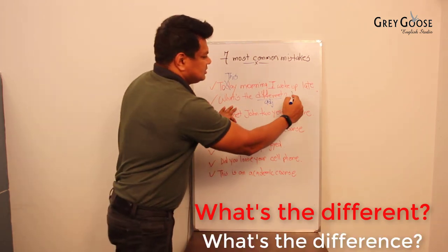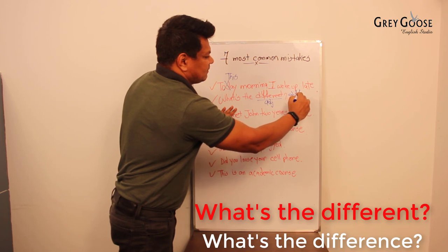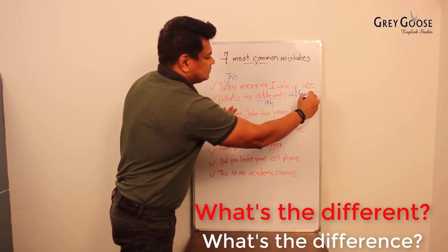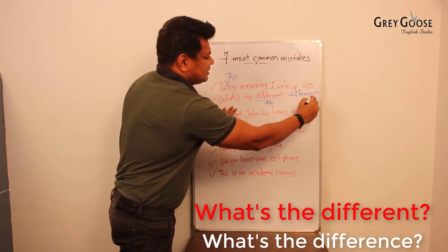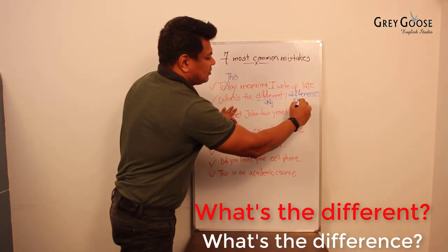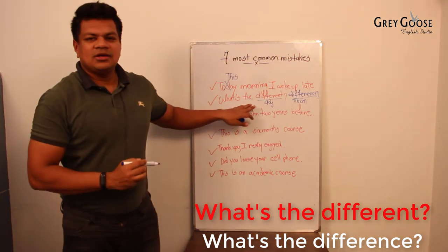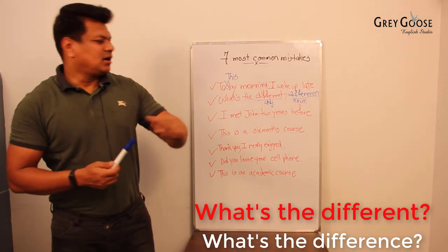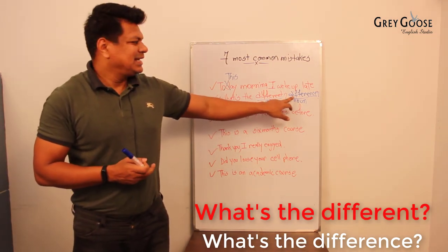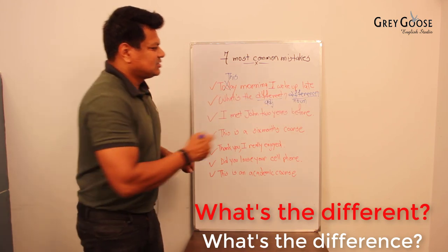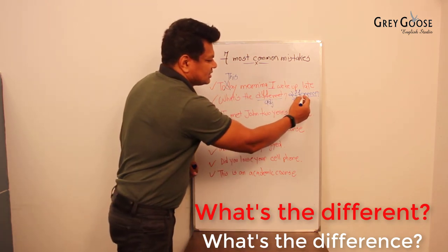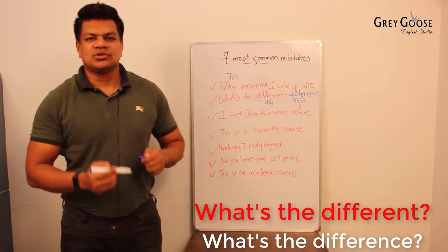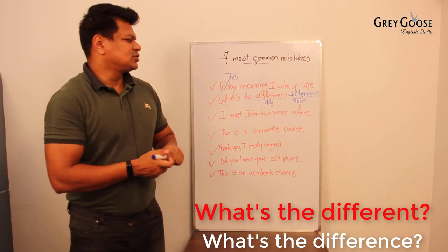be 'What's the difference? What's the difference?'—which is a noun. Now here you go, you get your correct sentence. That should be 'What's the difference?' And if I talk about the correct pronunciation of 'difference,' you don't pronounce this 'e.' It should be 'What's the difference?' So you don't consider that 'e' when you pronounce this word. Coming on to the next one: 'I met John two years before.'